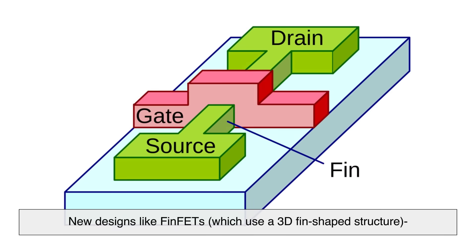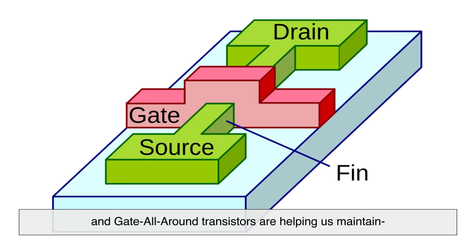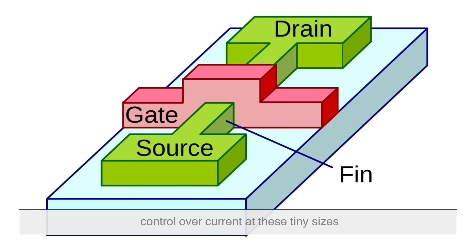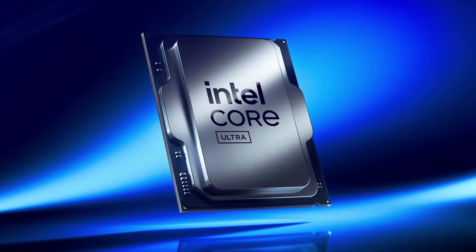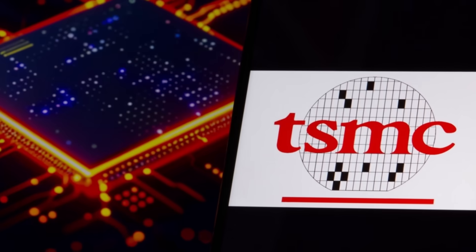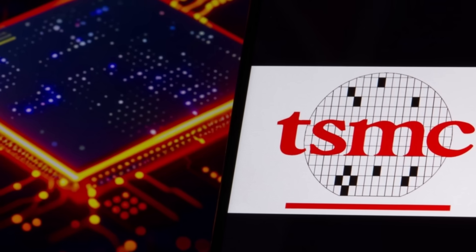New designs like FinFETs, which use a 3D fin-shaped structure, and gate all-around transistors, are helping us maintain control over current at these tiny sizes. Companies like Intel, AMD, and TSMC are constantly pushing the boundaries of how small we can go while keeping performance high.